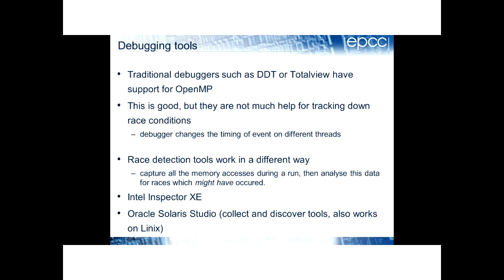Traditional debuggers like DDT and TotalView do have support for OpenMP, but they're not much help tracking down race conditions because running under a debugger changes the timing of events on different threads. There are race detection tools which work differently — they capture all memory accesses during the run and then analyze that data for races which might have occurred. Intel Inspector and Oracle Studio have this capability, which is a useful thing to use.